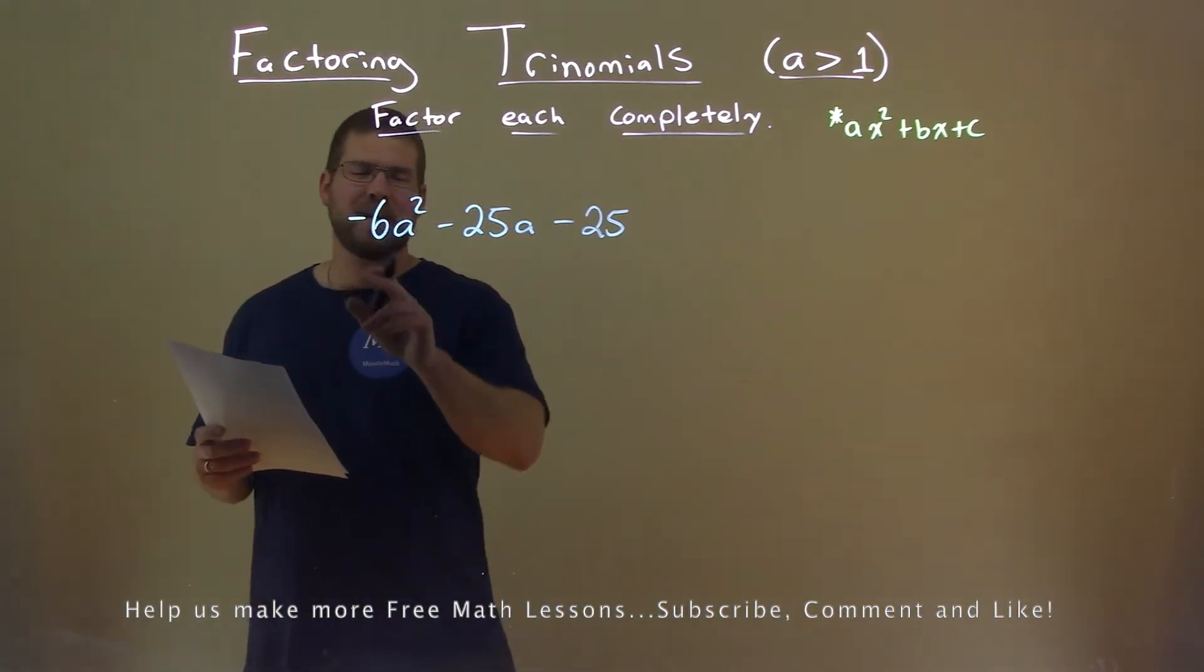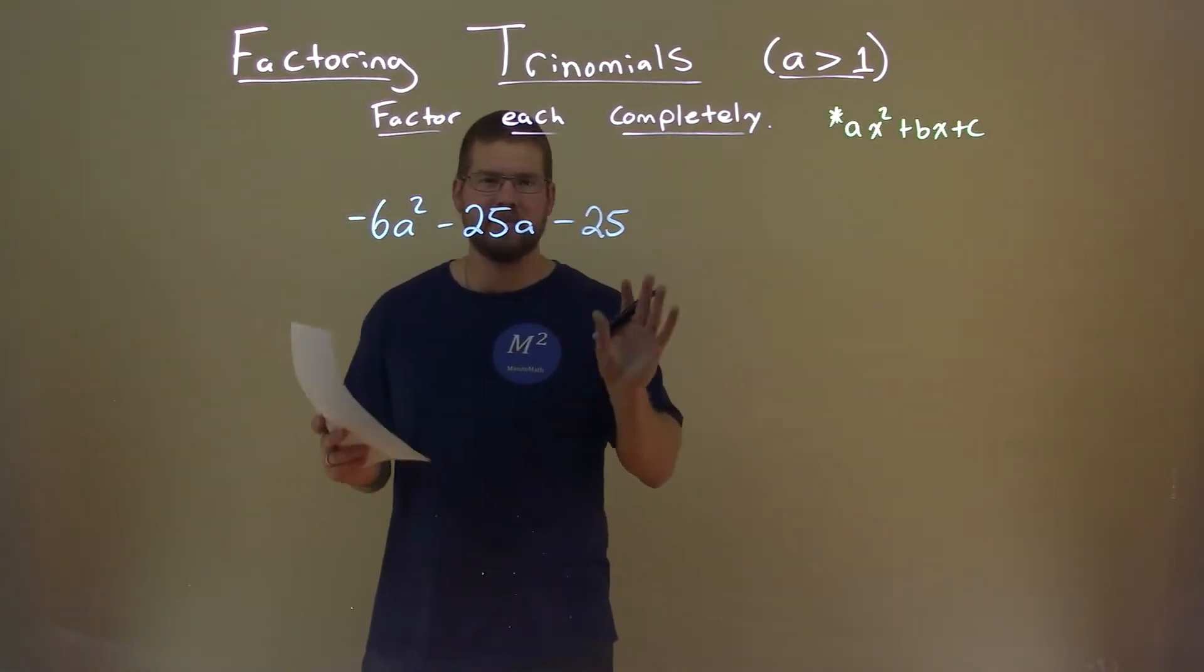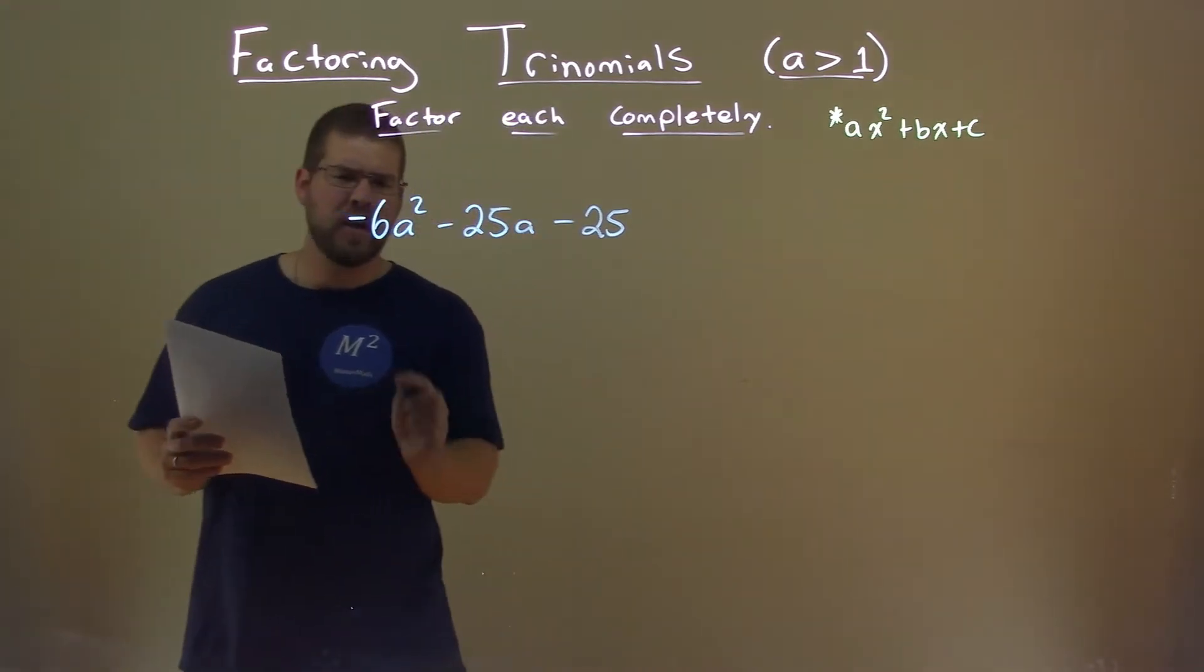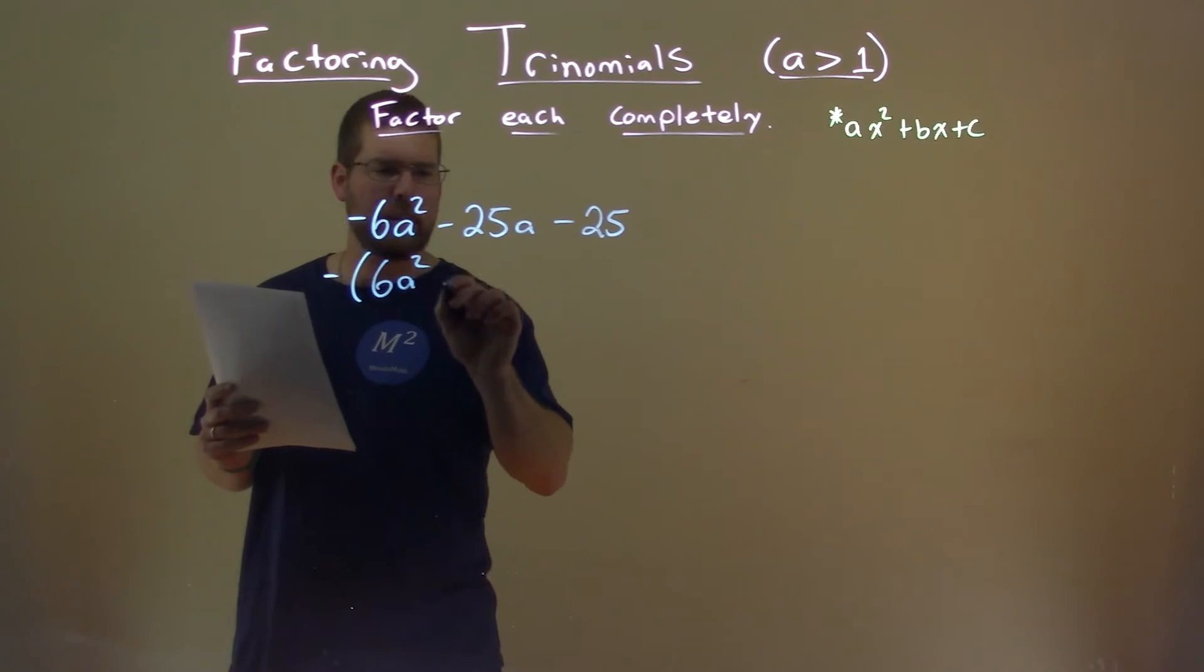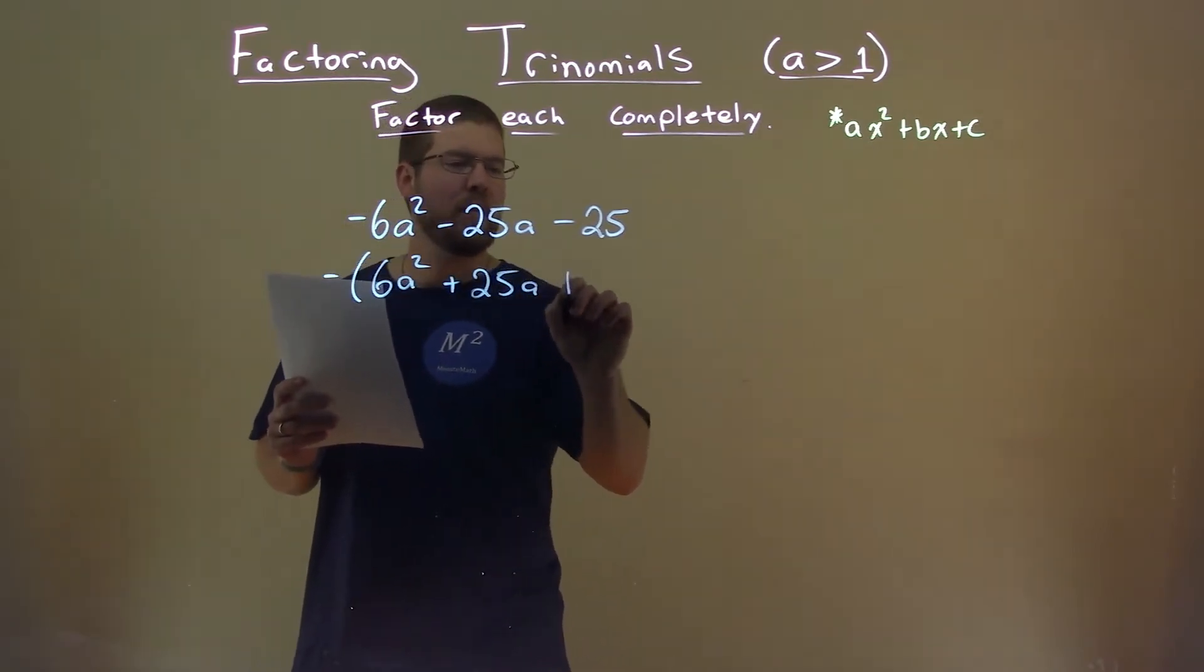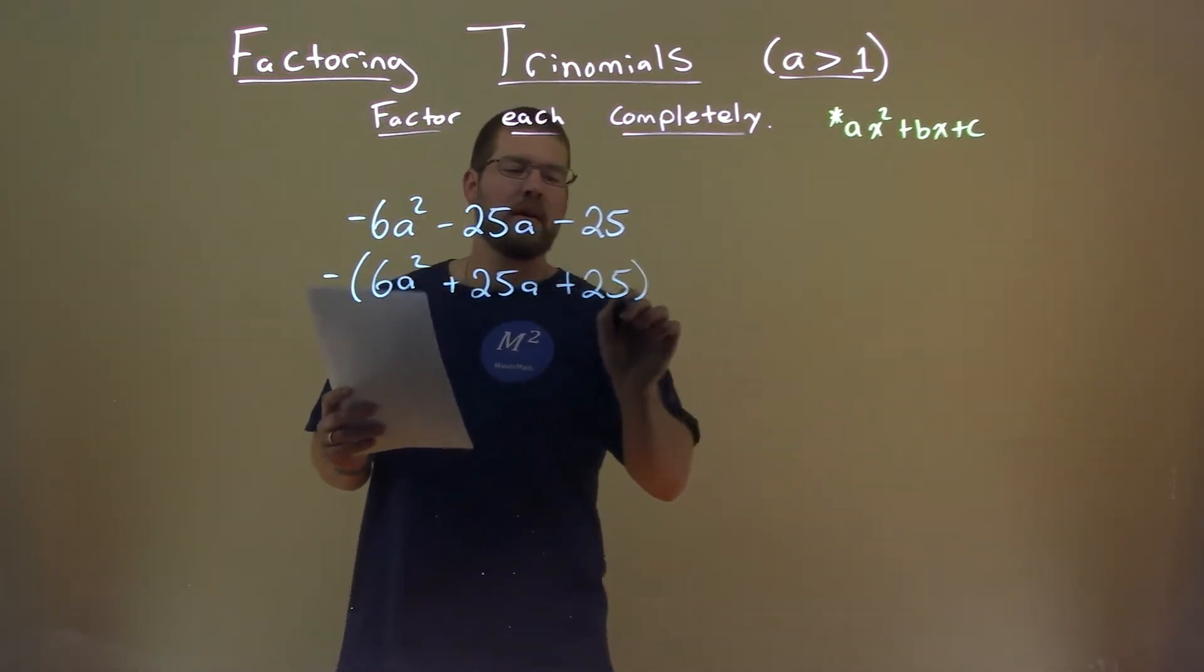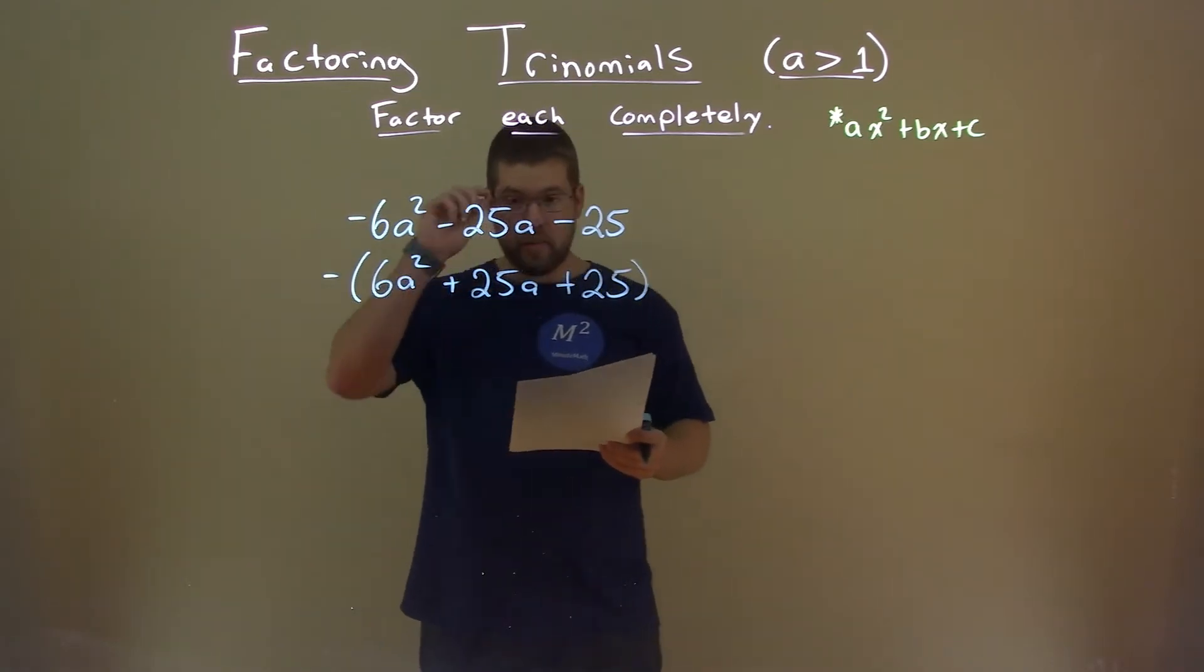First thing I'm looking at is I don't like a negative a value. It's not my cup of tea. So I'm going to pull that out: negative, and then we have 6a squared plus 25a plus 25. Much easier to deal with in my humble opinion.